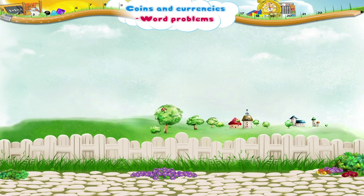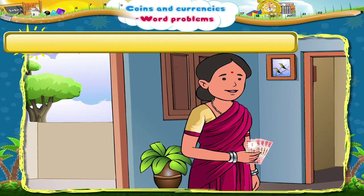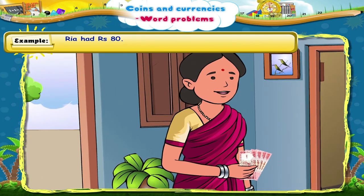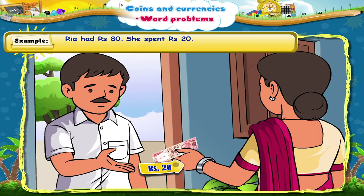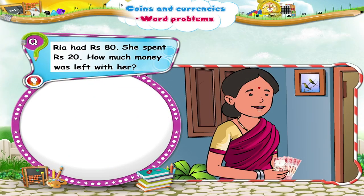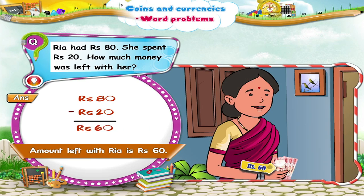Now let us revise what we have studied. Riya had rupees 80. She spent rupees 20. How much money was left with her? From rupees 80, we subtract rupees 20. The amount left with her is rupees 60.